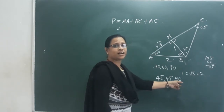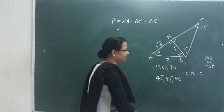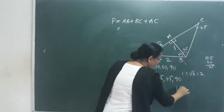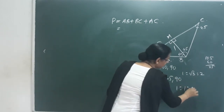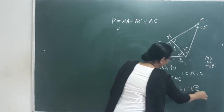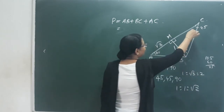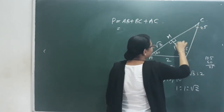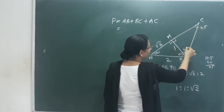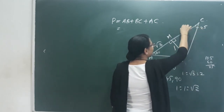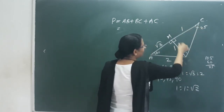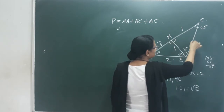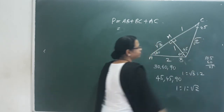For the 45-45-90 right triangle, the ratio is 1 : 1 : √2. The side opposite 45° is 1, the other side opposite 45° is 1, and the hypotenuse opposite 90° is √2.